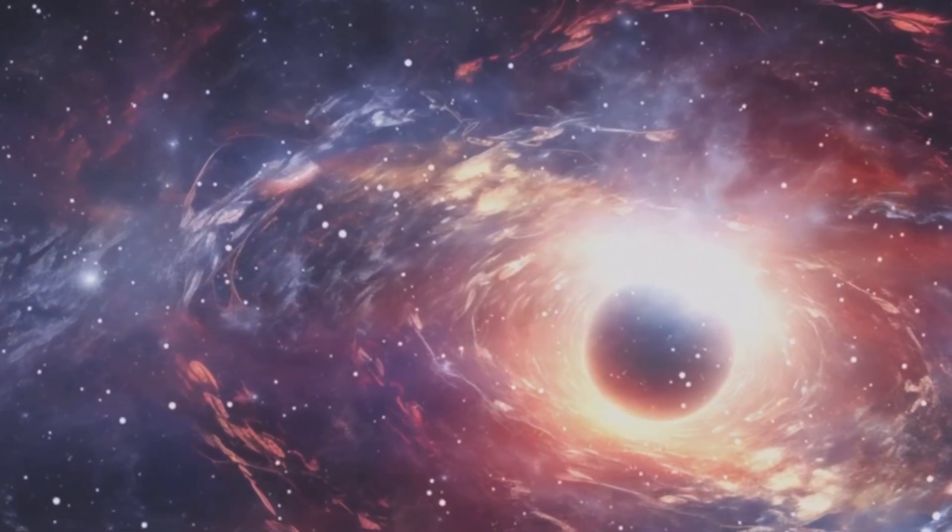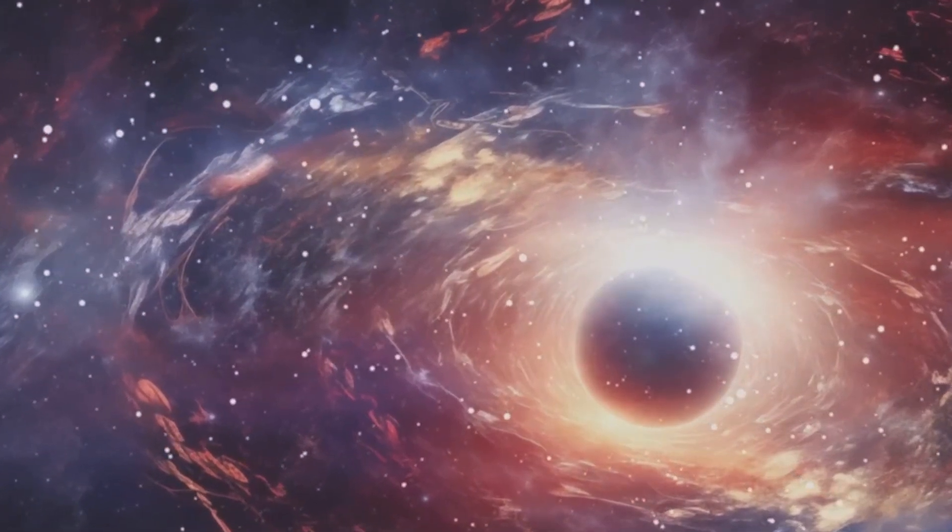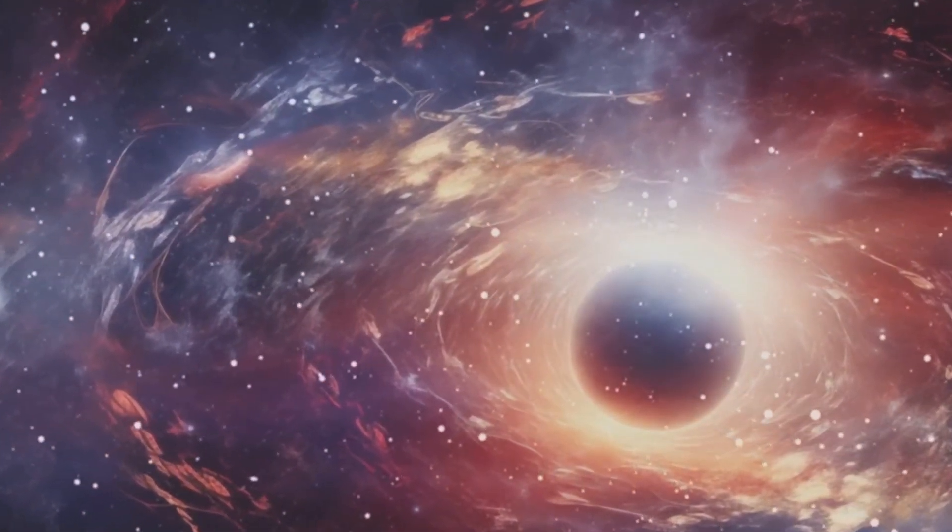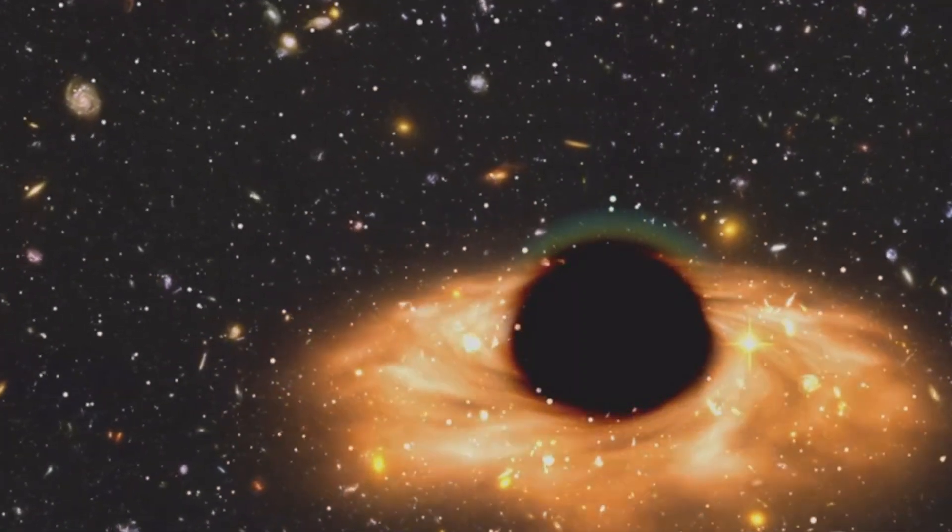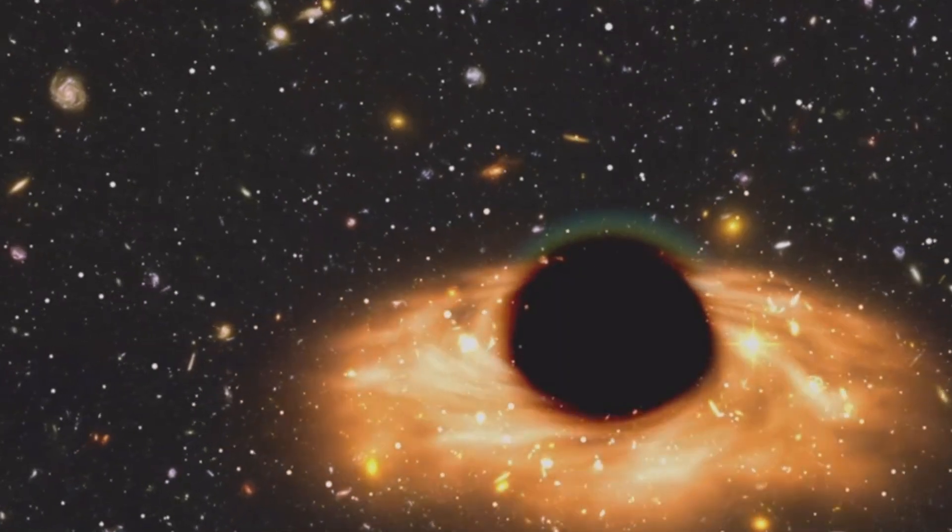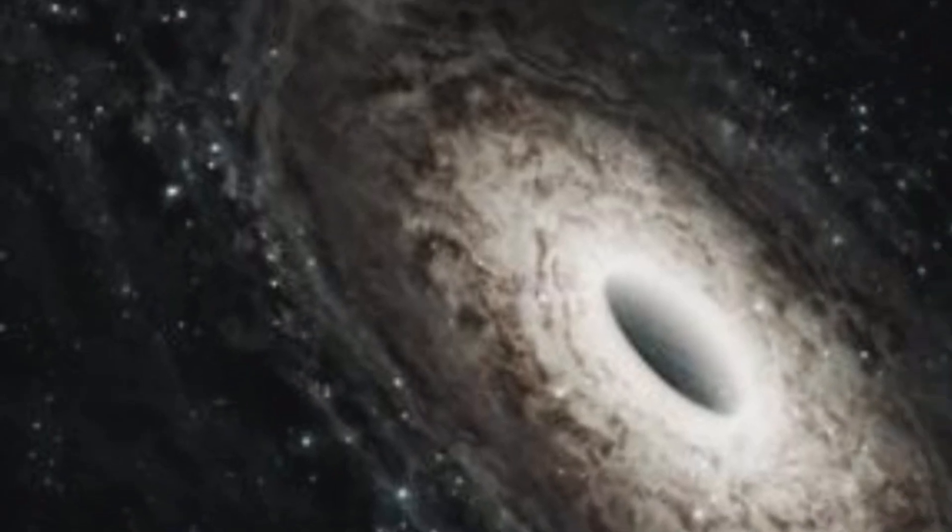While our Milky Way forms around one star per year, Phoenix A churns out an astounding 740 stars annually. Yet the galaxy's most remarkable feature lies at its core: a supermassive black hole so immense that it ranks among the largest known black holes in the observable universe.